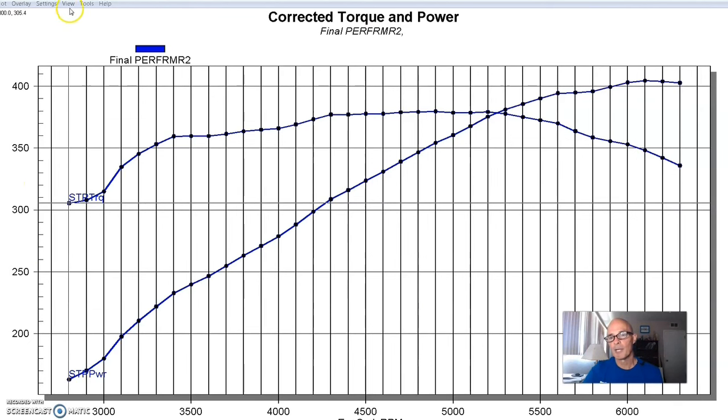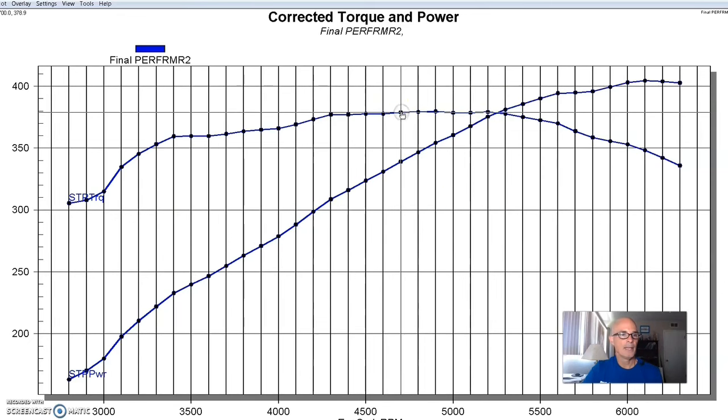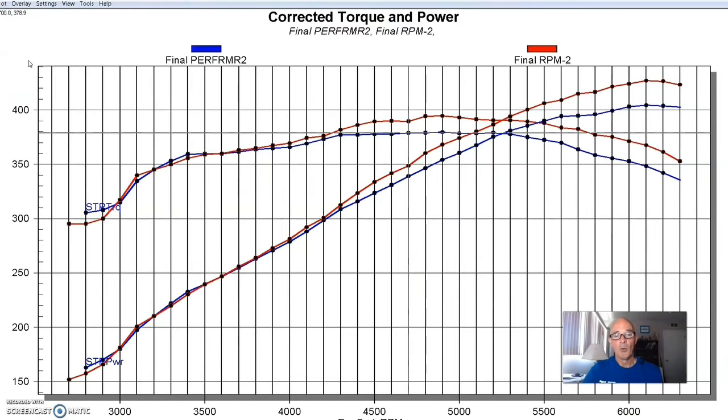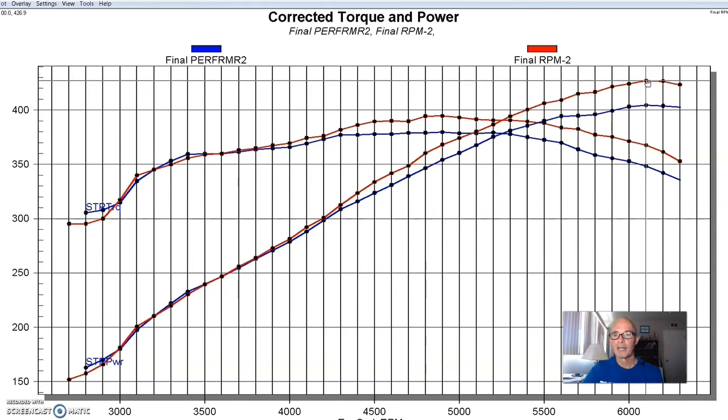Here's what happened when we ran the first combination with our Edelbrock RPM 289 intake. This thing produced 404 horsepower and 379 foot-pounds of torque. Here's what happened when we replaced that RPM 289 intake with the RPM Air Gap. We picked up a fairly good bit of power, maybe lost a touch down below 3,000 RPM, but the peak power jumped up to 427 horsepower, which is a good amount for this kind of combination. Peak torque was 395 foot-pounds, so good torque production there.